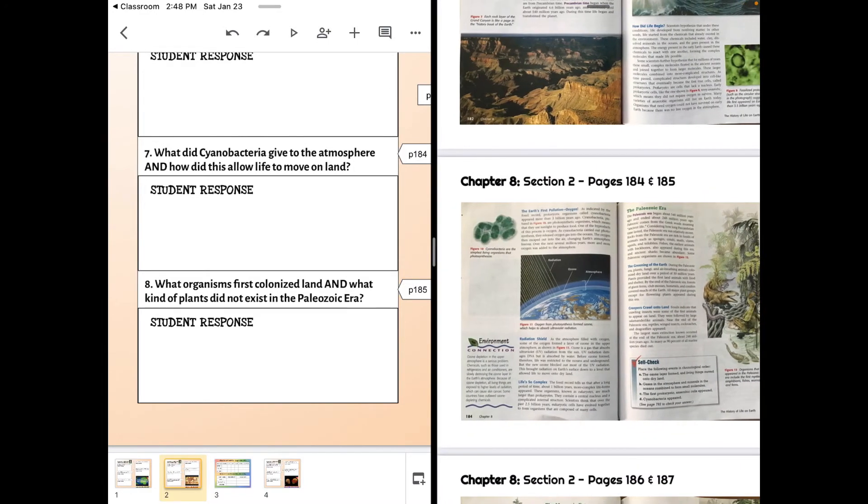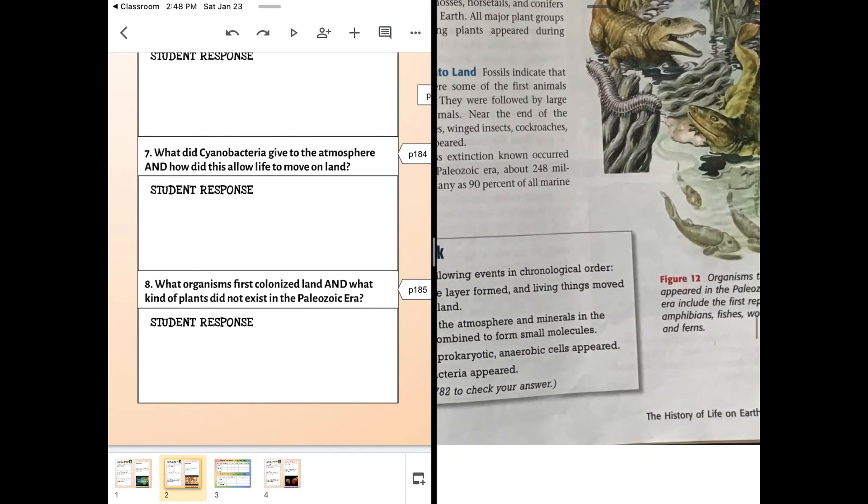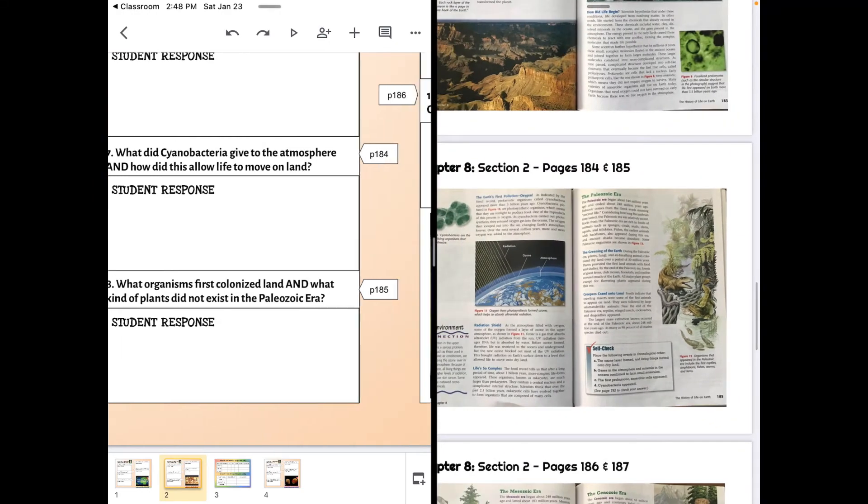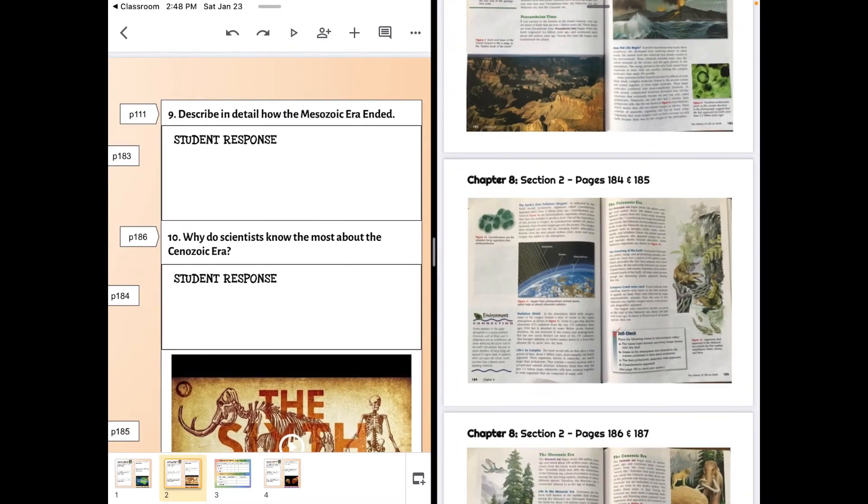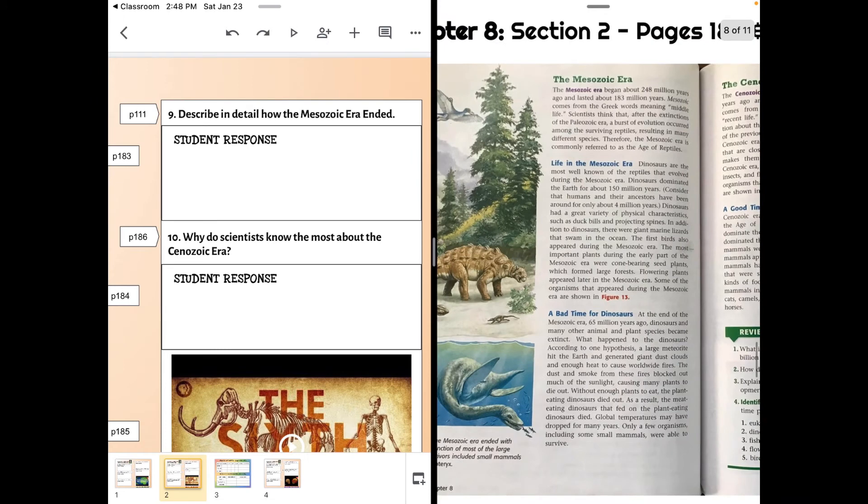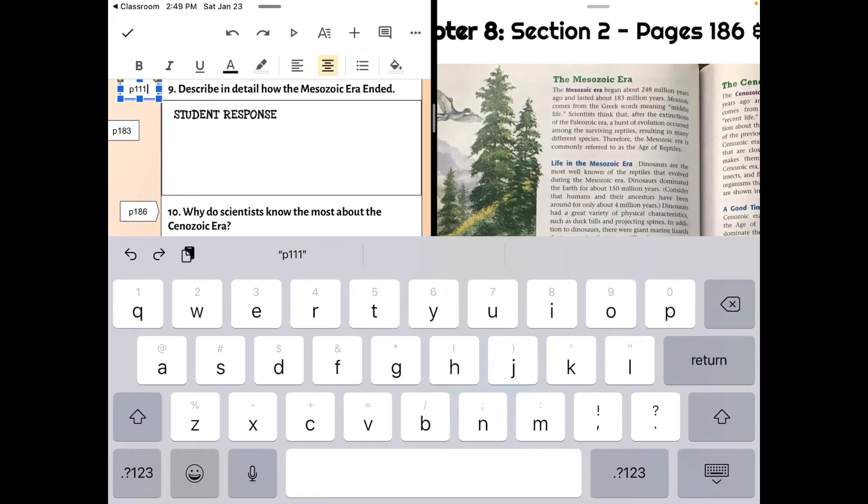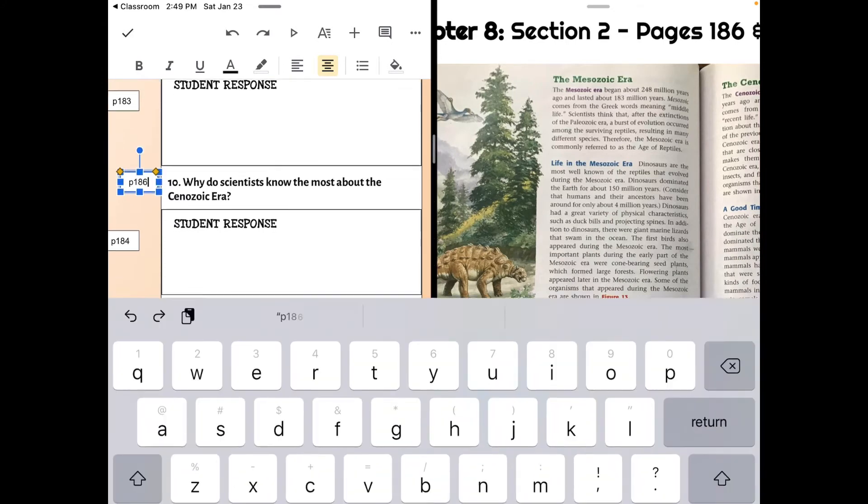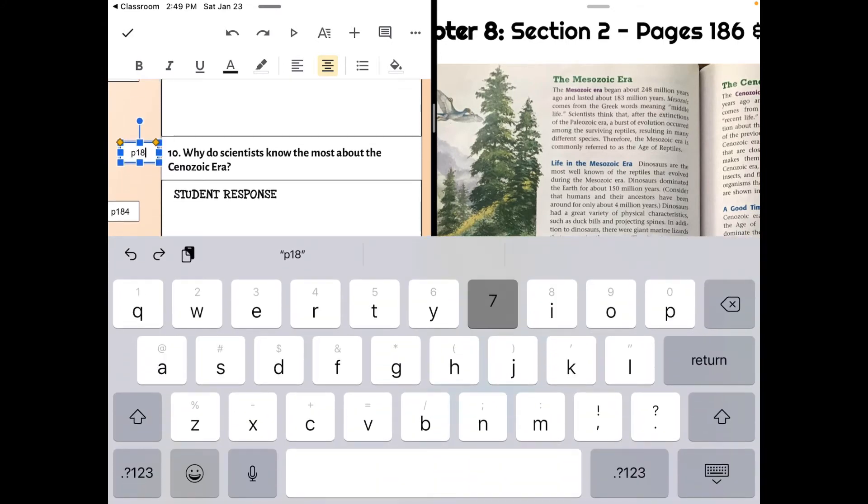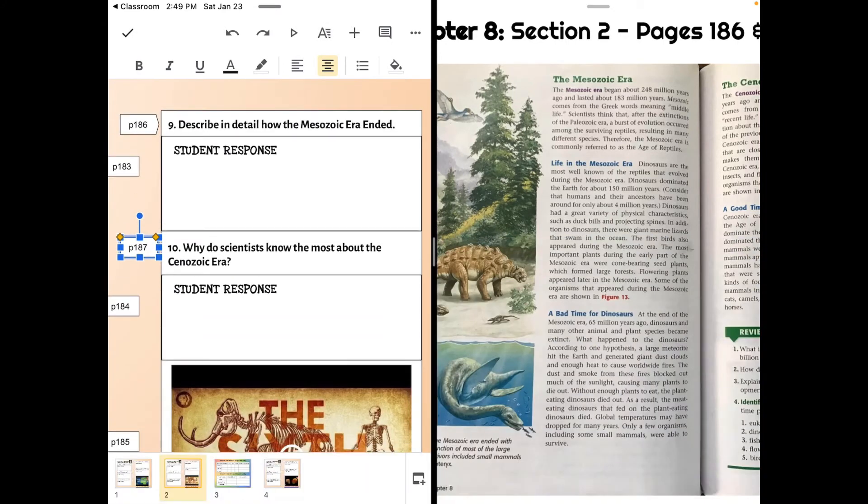Then we move on. So that was page 185. How did the Mesozoic Era end? That's what this is about. And so we have some wrong page numbers. So this one should be 186, and this one should be 187. And I apologize for having those page numbers wrong.